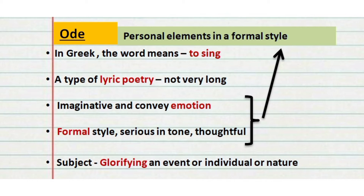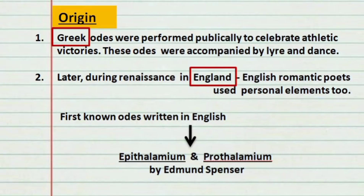The subject of an ode usually glorifies an event, an individual, or even nature. For example, the 'Ode to a Nightingale' is an ode written by the poet John Keats. The poem shows intense emotions and sensuous language, and it glorifies the nightingale. Overall, it is a very thoughtful poem that shows the transience of life and the permanence of art.